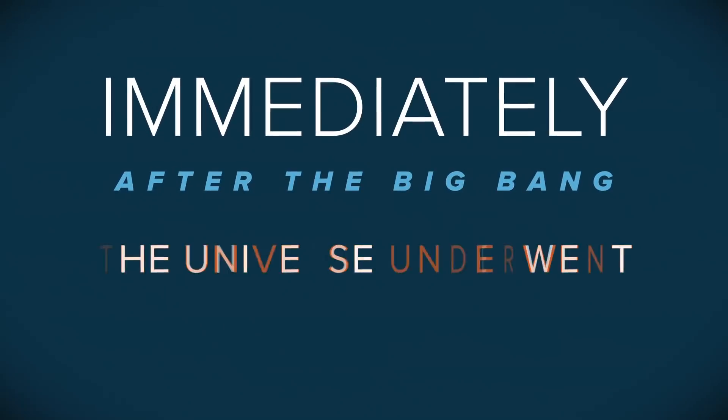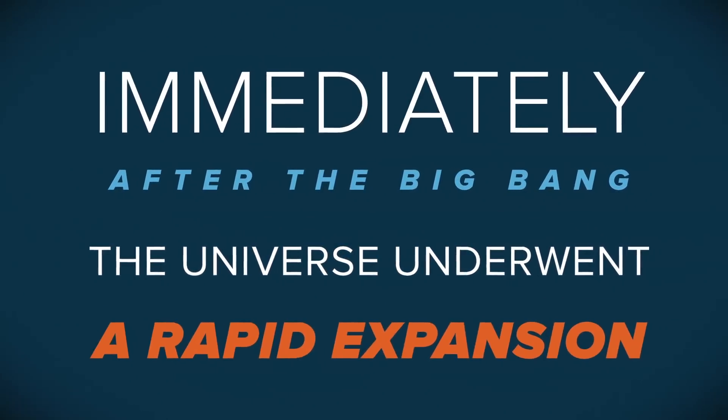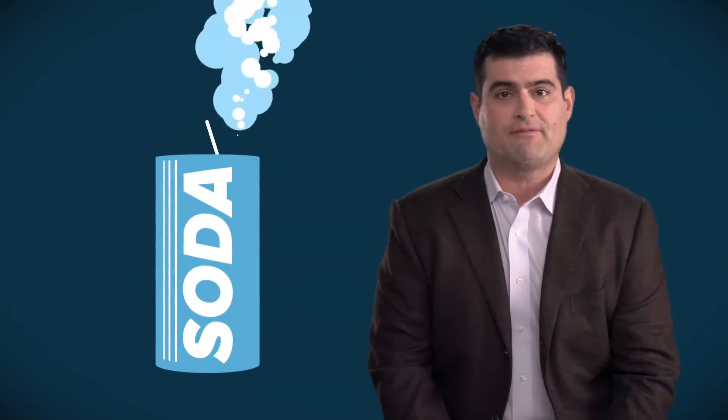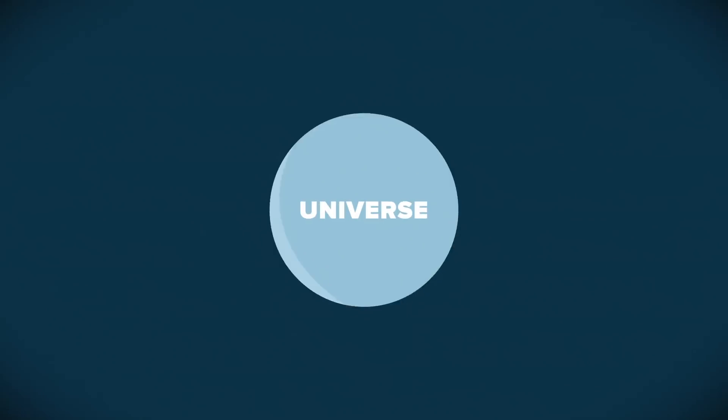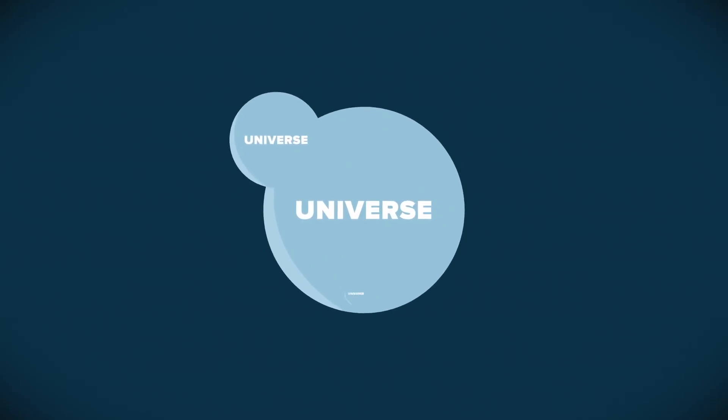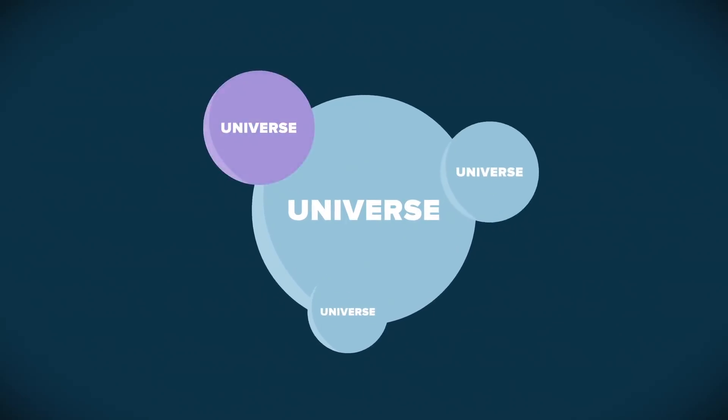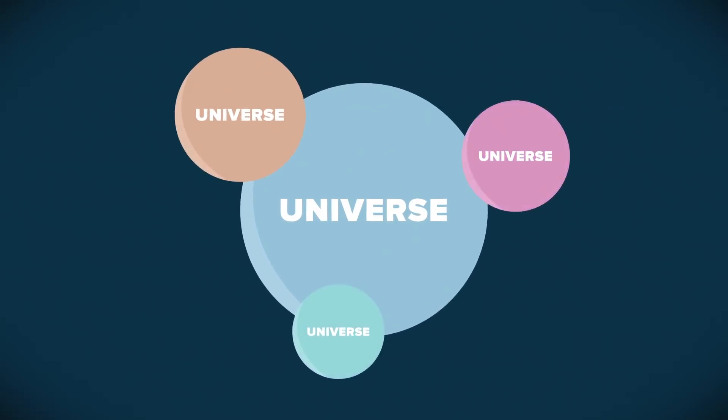Immediately after the big bang, the universe underwent a rapid expansion. Think of a gush of bubbles exploding from a seriously shaken soda can just after it's popped open. Cosmologists call this the theory of inflation. As the universe inflates and expands, the bubble universes grow and separate to become their own distinct entities, each with their own unique properties.